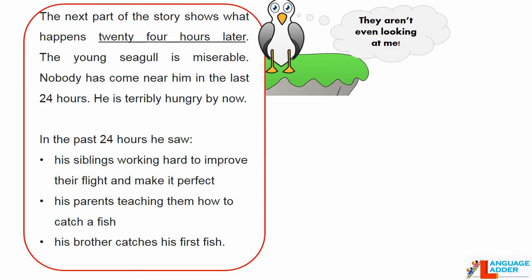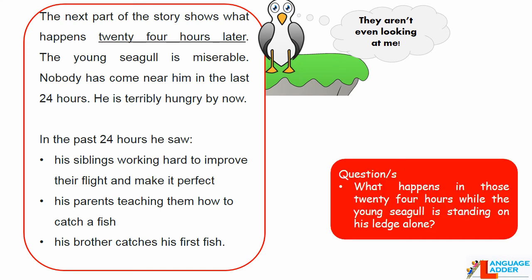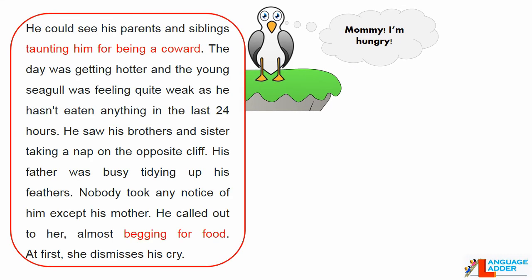The next part of the story shows what happens 24 hours later. The young seagull is miserable — nobody has come near him and he's terribly hungry. In the past 24 hours he saw his siblings working hard to improve their flight and make it perfect, his parents teaching them how to catch a fish, and his brother catching his first fish. He could see his parents and siblings taunting him for being a coward. The day was getting hotter and the young seagull was feeling quite weak. He saw his brothers and sister taking a nap on the opposite cliff while his father was busy tidying up his feathers. Nobody took any notice of him except his mother — he called out to her, almost begging for food, but at first she dismissed his cry.